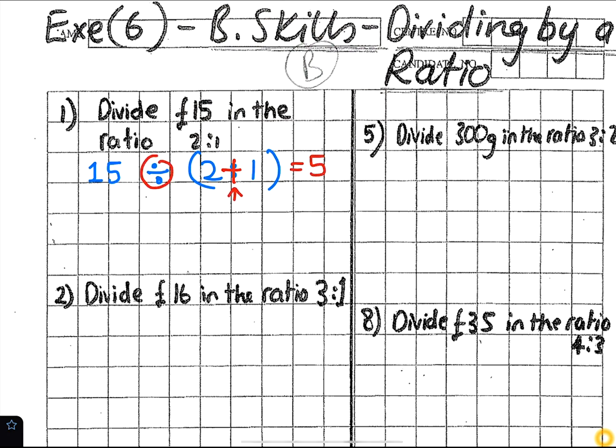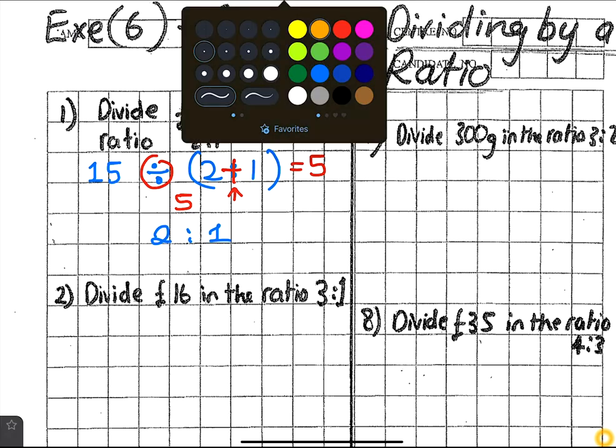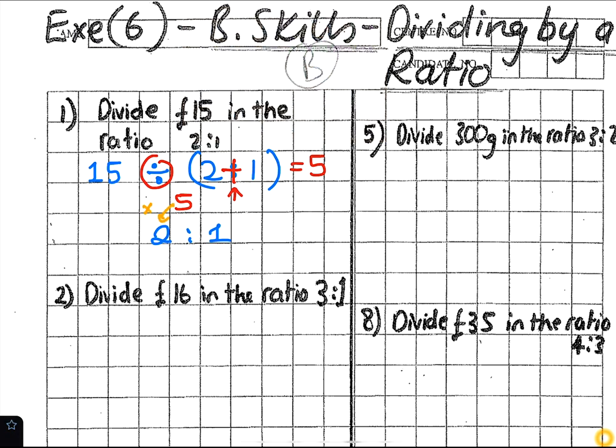So dividing by the ratio means add the ratio. That's 15 divided by 3. First we divide by the ratio added. What do we do with the 5? Once you have the 5, what do you do? You times by the ratio. What's 5 times 2 and what's 5 times 1? 10 and 5.